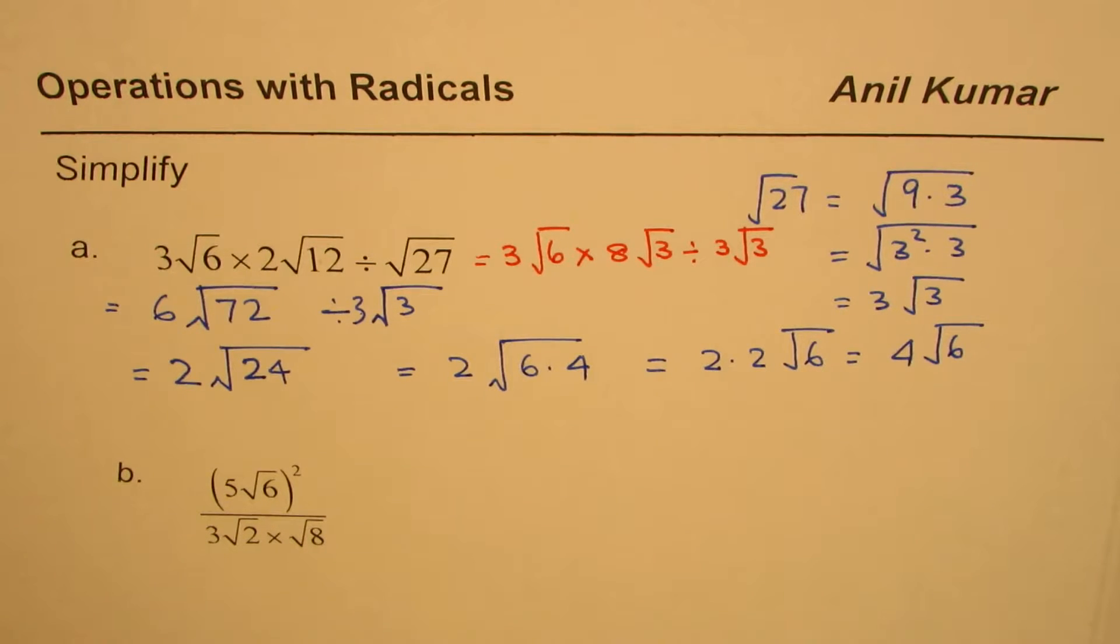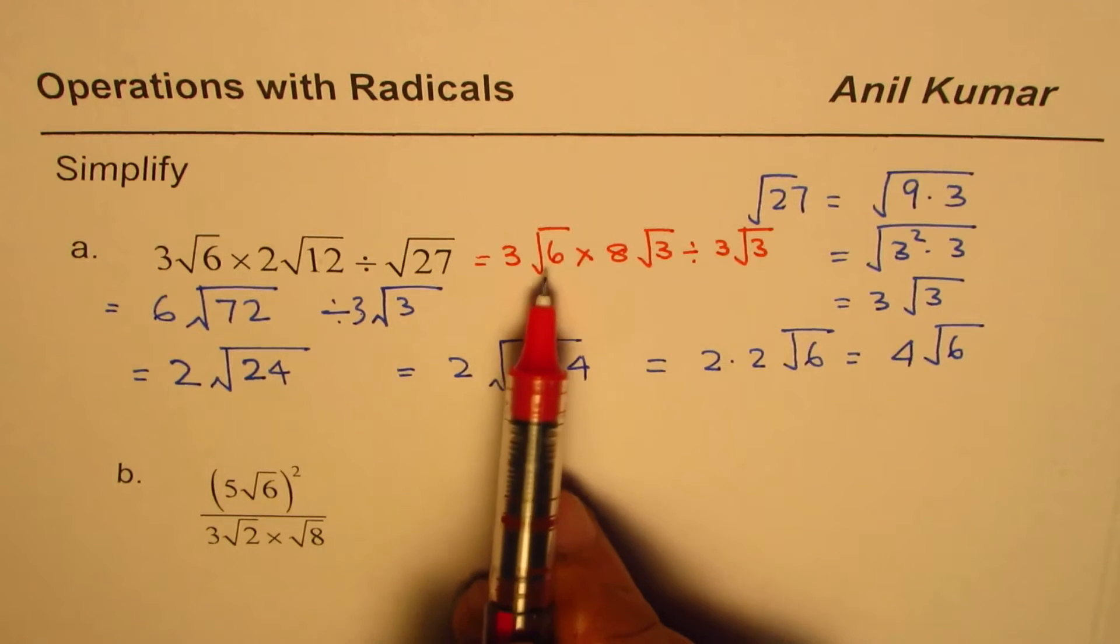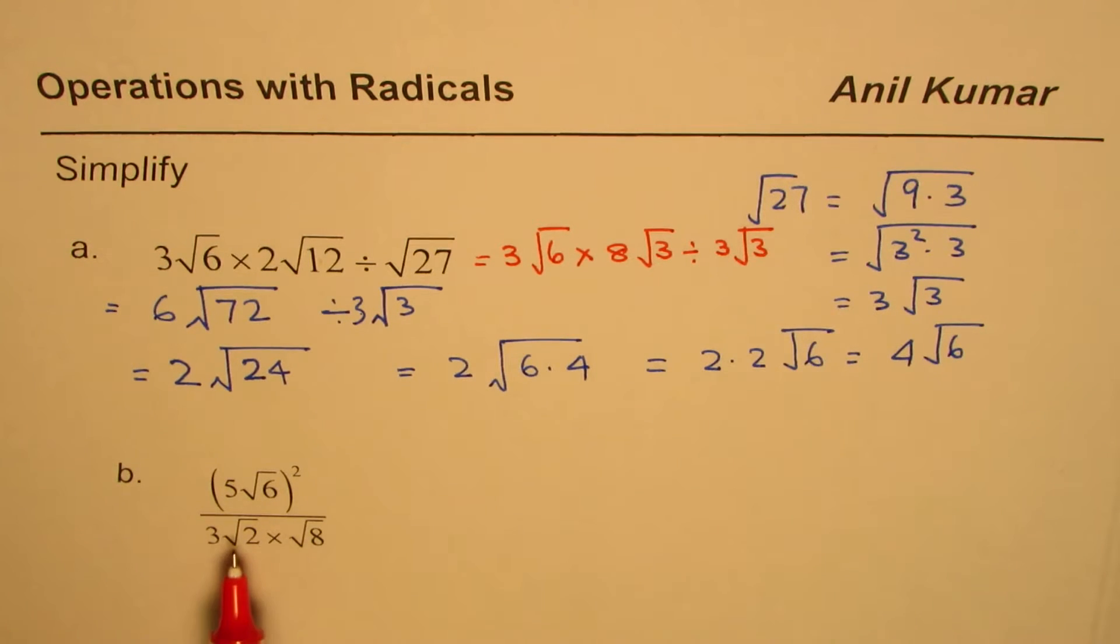I hope this helps. So try this one out on your own. Let's do the second one, which is (5√6)² divided by 3√2 × √8.